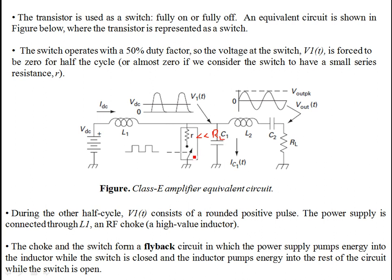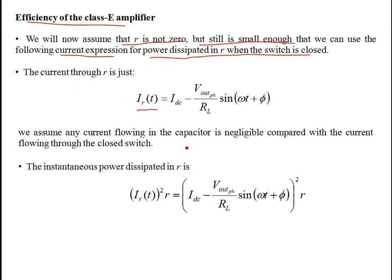There is a finite on-resistance — it's not zero. Once the switch closes, you can assume that there is negligible current flowing in capacitor C1 because C1 is almost shorted out, so all the current flows through to the JFET. The current through R, IRT, is IDC minus the load current. Once the switch closes, we assume any current flowing in the capacitor is negligible compared with the current flowing through the closed switch.